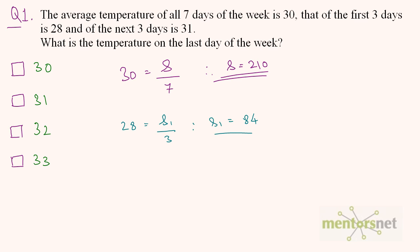Again, the average temperature of the next 3 days is 31. So 31 is equal to — let us term the sum of the next 3 days' temperature as S2 — divided by 3. Therefore S2 is equal to 31 times 3, which is 93.